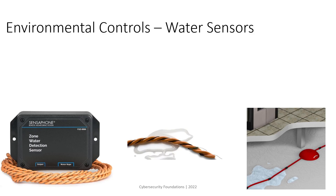For environmental control, we also need detection inside our data center to ensure that whenever we have a water leakage, we can detect it. There are multiple reasons for water leakage — one is a defective pipe. This is a viable option.